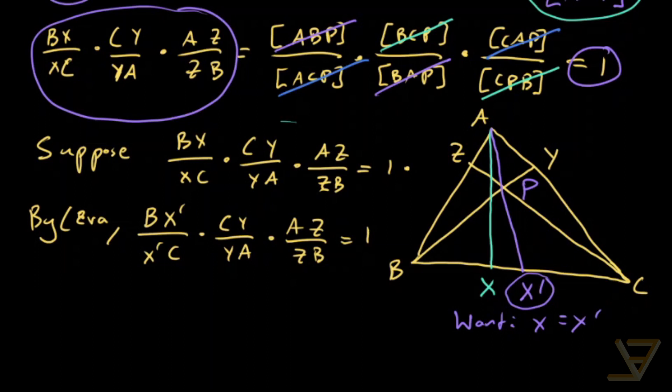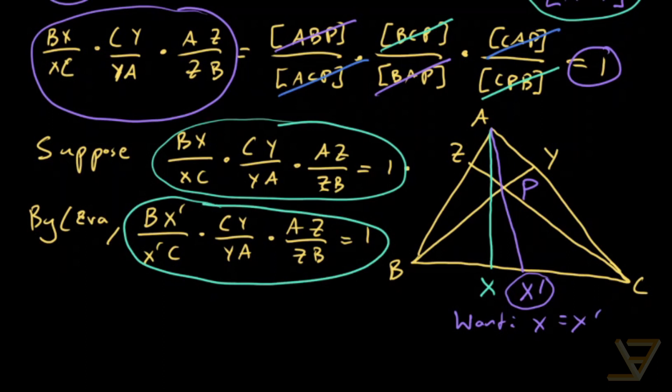And now what we're going to do is we're going to take the assumption here and we're going to take our derived formula here. We're going to set them equal to each other. So what we end up getting is that BX over XC is equal to BX prime over X prime C.